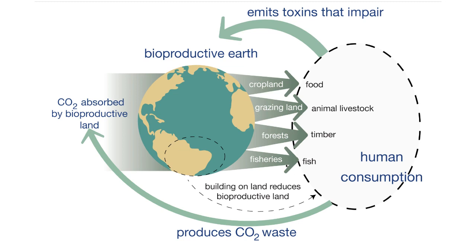The earth is divided into four different types of bioproductive land. Those lands produce products that are consumed by humans, and that consumption produces CO2 as a waste stream that is resorbed by the land and water. It also emits toxins that impair the bioproductivity of the earth. Additionally, there can be a change of land use — for example, conversion to urban areas rather than agricultural use — that reduces the total bioproductivity of the earth.